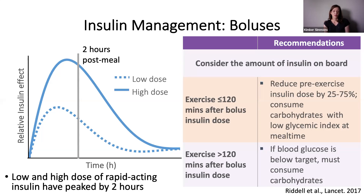Consume carbohydrates with a lower glycemic index at mealtime. If you're going to exercise more than two hours after giving a short-acting bolus dose, give the full amount — you don't want a spike of high blood sugar in anticipation of exercising and staying high for a while. Then you pull out that other tool — carbohydrates — to keep your blood sugar levels high enough.